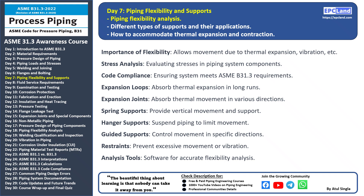Code compliance: piping systems must meet the requirements of ASME B31.3 to ensure safety, integrity, and reliability. Expansion loops: long pipe runs incorporate expansion loops that absorb thermal expansion and prevent excessive stress. Expansion joints are components that absorb movement in various directions caused by thermal expansion, seismic activity, or other factors. Spring supports control vertical movement while providing support to the piping system.